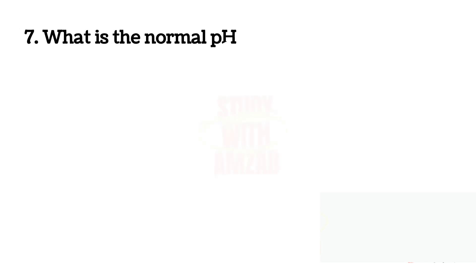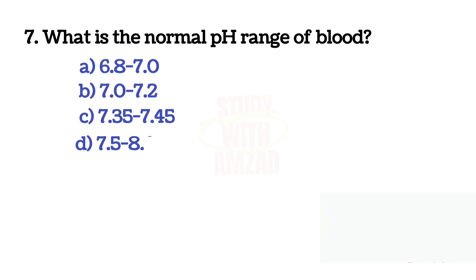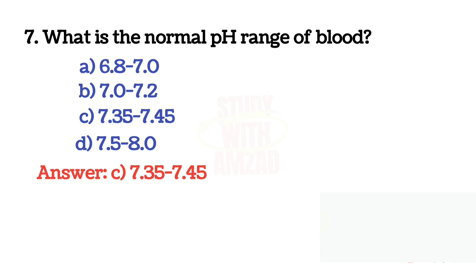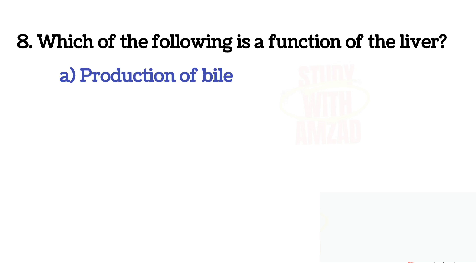Next question: What is the normal pH range of blood? The correct answer is C: 7.35 to 7.45.